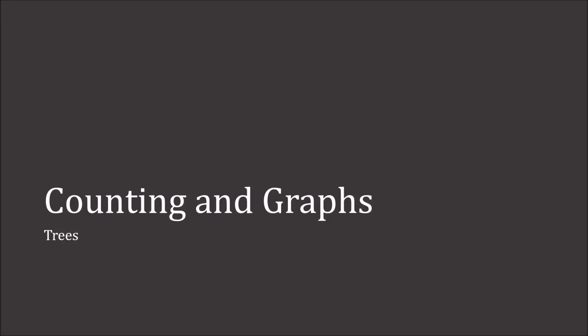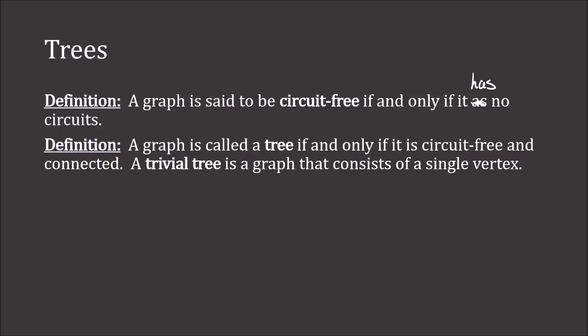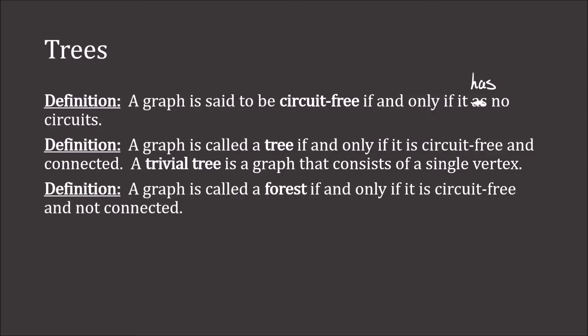In this video, we will conclude by looking at trees. A graph is said to be circuit-free if and only if it has no circuits. A graph is called a tree if and only if it is circuit-free and it is connected. A trivial tree is a graph that consists of a single vertex. And a graph is called a forest if and only if it is circuit-free and not connected.